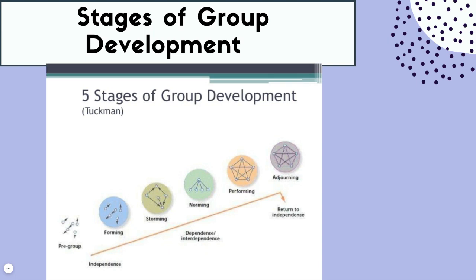The next stage is storming. This is when there is some conflict — conflict is a normal, healthy part of group, so it's nothing to shy away from. In the storming phase, group members might have some disagreements because they're becoming more comfortable with one another and feel able to express their opinion.